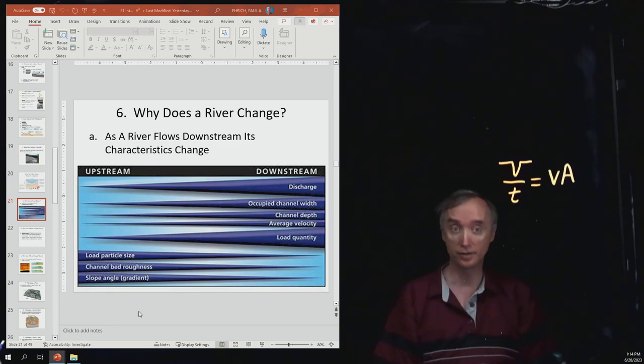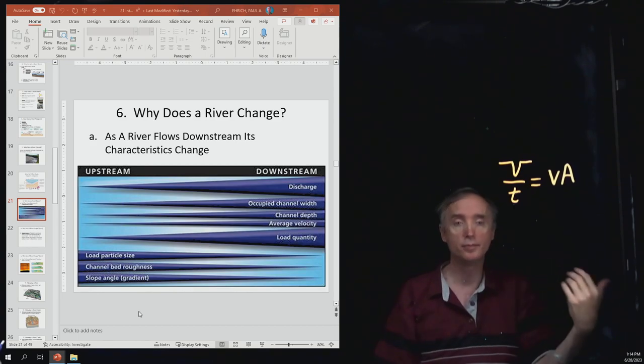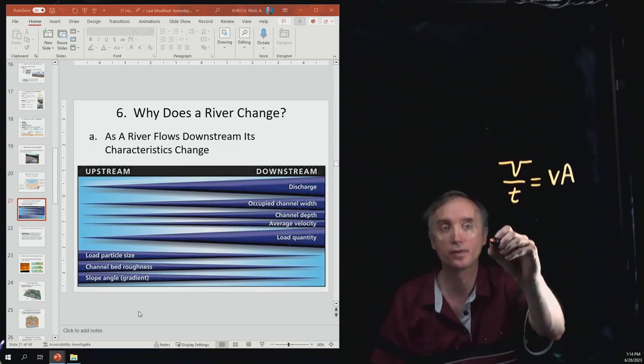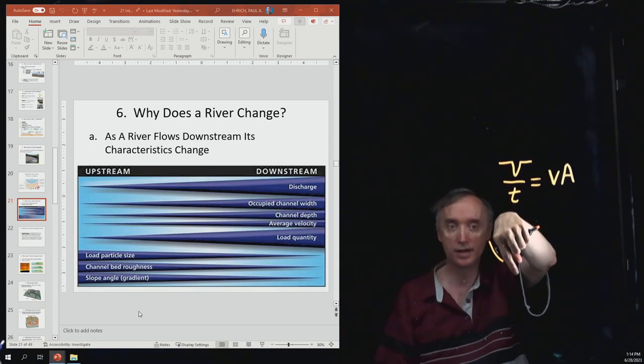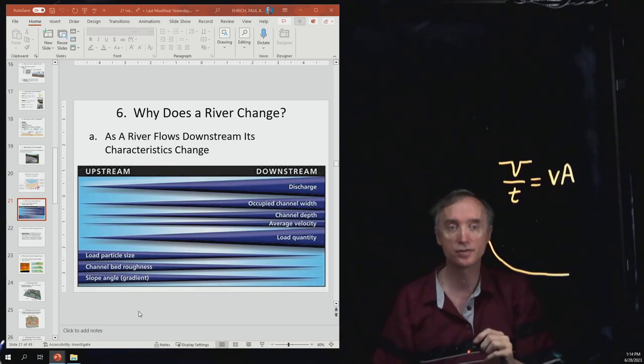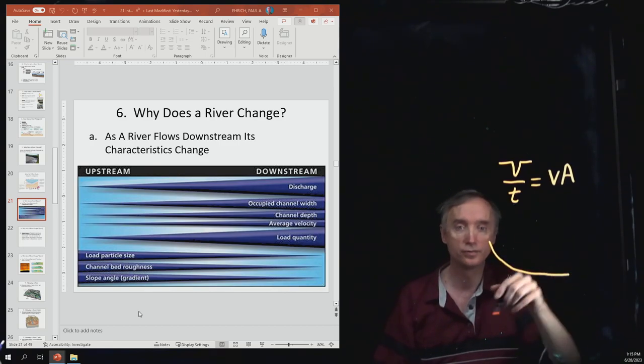The next thing is the channel roughness. So when you're in the mountains, you got boulders on the bottom of the river channel. It's very rough. But by the time you get to the Mississippi, remember it's got all that clay. That clay settles and so it covers the bottom of the river channel in clay and that's very smooth. Then the last thing is going to be the slope, the angle. So when it's in the mountains, it's very steep as it's going downhill. But as it approaches the ocean, it's going to start to level out. So the slope is getting smaller and smaller the closer you get to the ocean.